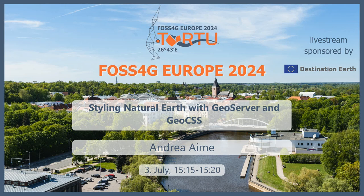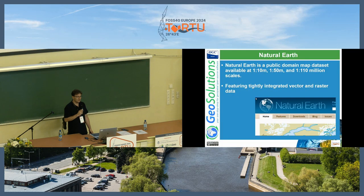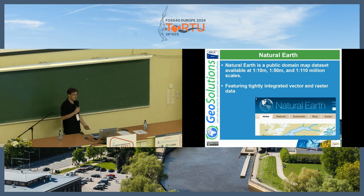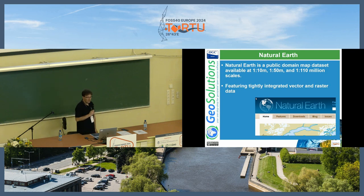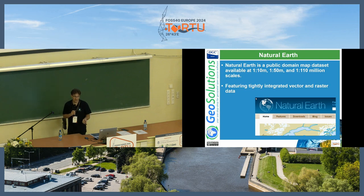Natural Earth is a public domain map dataset for low-scale mapping, which you can use as a base map for any low-scale endeavor. It features tightly integrated vector data and raster data, and it's free to use.